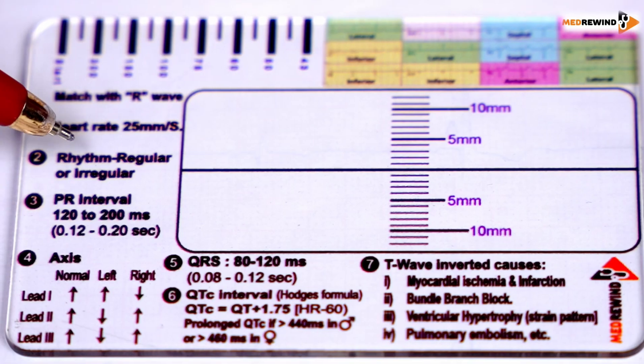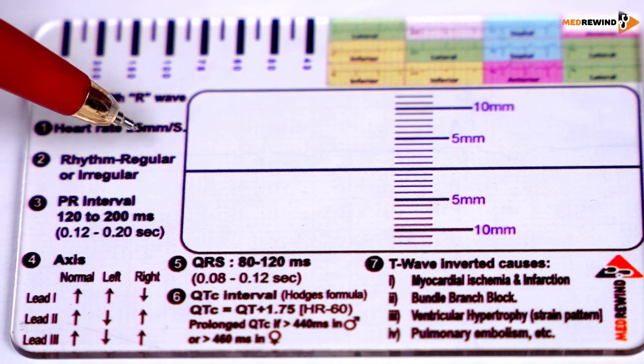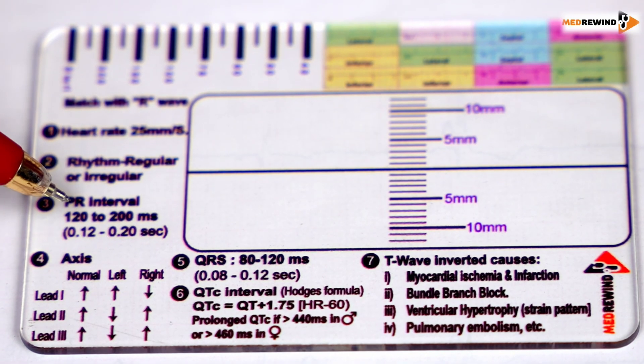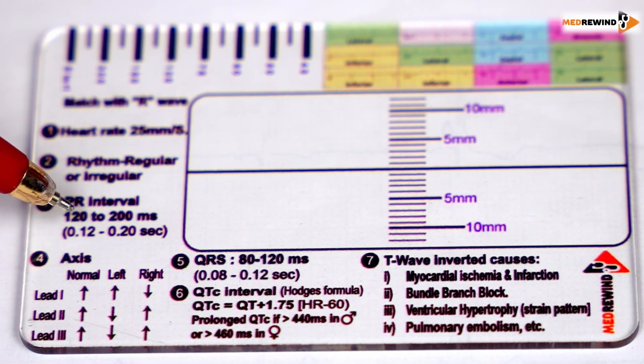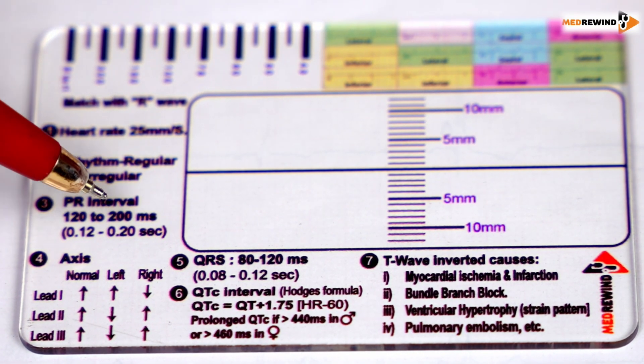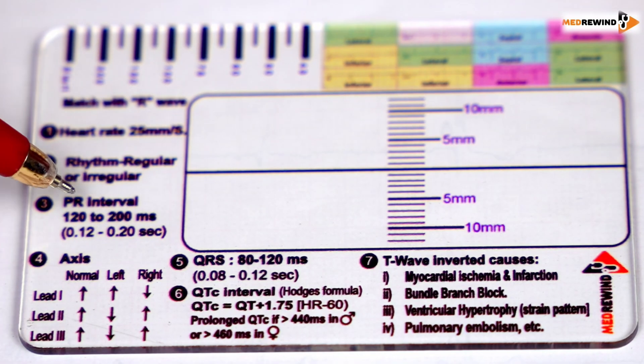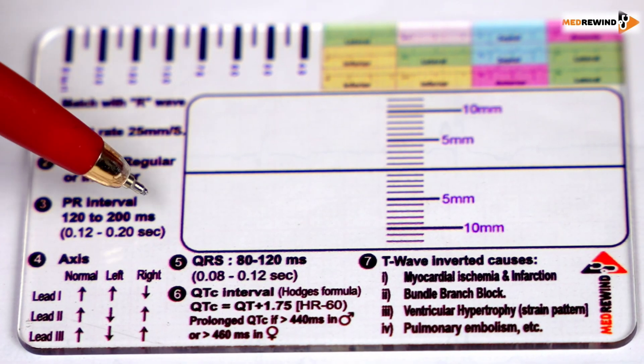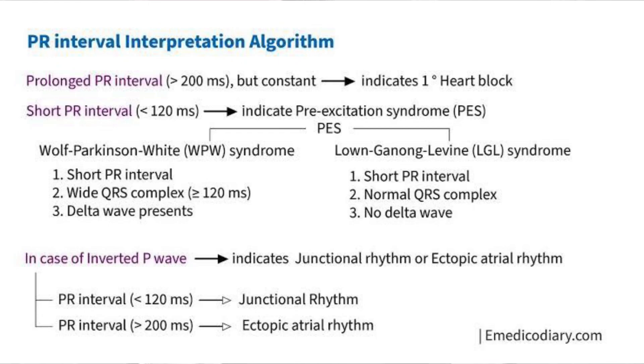Step 2, we are assessing the rhythm — whether the rhythm is regular or irregular. Coming to the third step, we are checking the PR interval. Normally the PR interval is between 0.12 to 0.20 seconds, or 120 to 200 milliseconds. By this we can understand whether there is heart block or any other pathology involved.